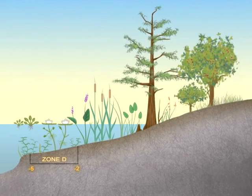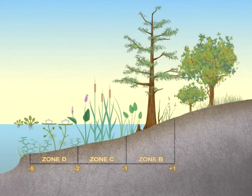Zone C is from one to two feet deep — here is where emergent plants thrive. Zone B is from one foot deep in the water to one foot above the normal water line, and this is where emergent and shoreline plants grow best.